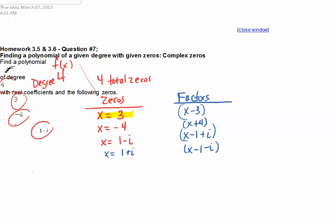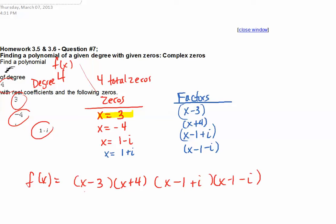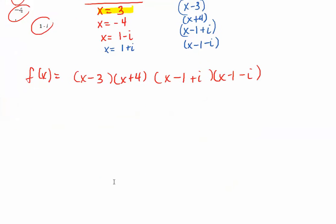Now I want to start with my polynomial. So if my polynomial is f of x, I'm going to write my real factors first. In factored form it's x minus 3 times x plus 4 times x minus 1 plus i times x minus 1 minus i. And here you want to just FOIL things out.